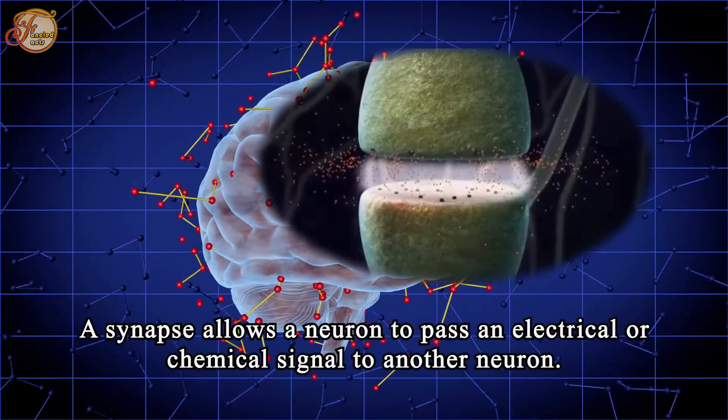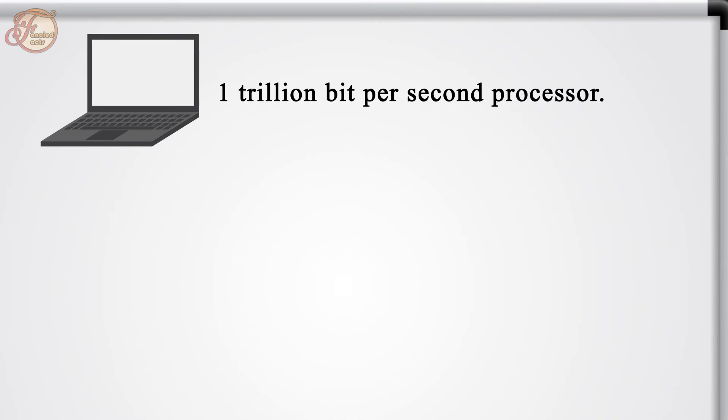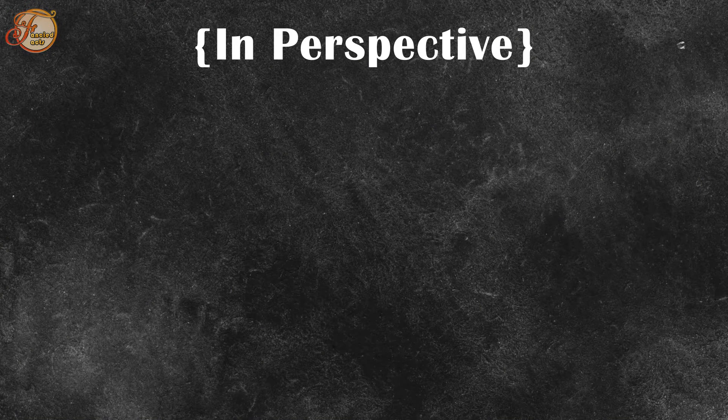A synapse allows a neuron to pass an electrical or chemical signal to another neuron. In computer terms, these connections are estimated to be 1 trillion bit per second processor. Estimates of the human brain memory capacity vary widely from 1 to 1,000 terabytes, or about 1 petabyte.